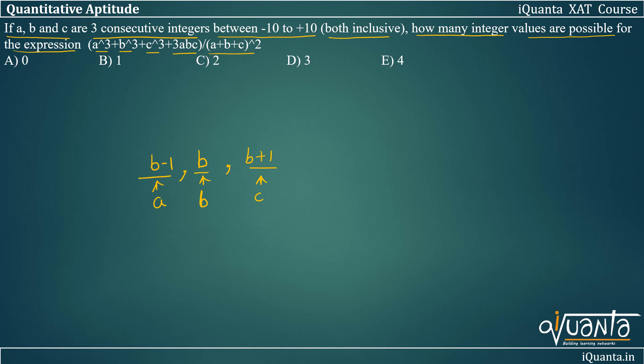We'll be putting these values into the expression. So we have A³, that means (B - 1)³, plus B³ will be B³. C will be (B + 1)³, plus 3A is (B - 1), B will be B, and C will be (B + 1).